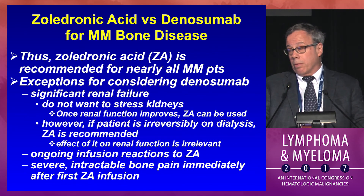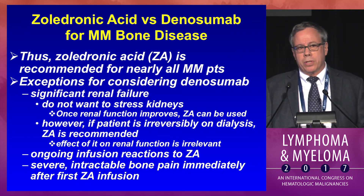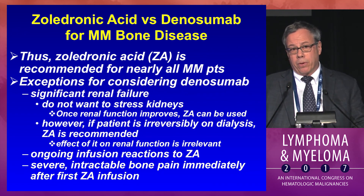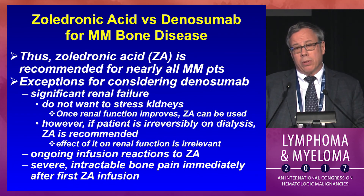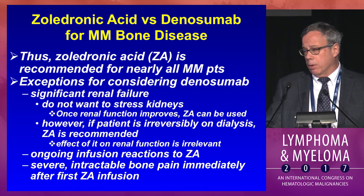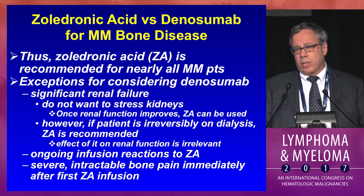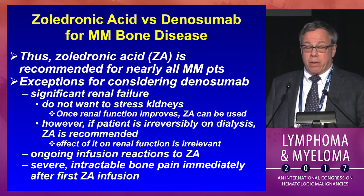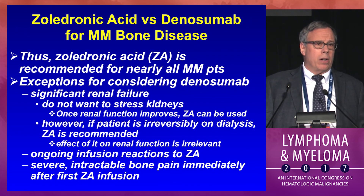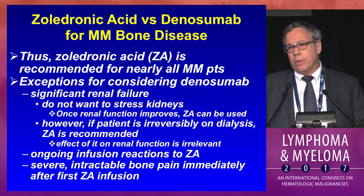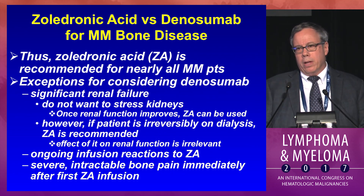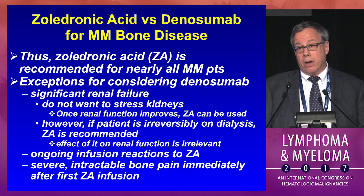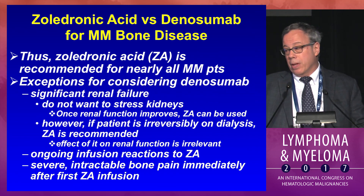I'm using denosumab now in patients with significant renal failure, particularly early in the disease course when you want to reverse renal failure and don't want to further insult the kidney with zoledronic acid. Once renal function improves, zoledronic acid is fine. If a patient is irreversibly on dialysis, there's no reason not to use zoledronic acid — you can't cause further harm. And in very rare patients with significant infusion reactions to zoledronic acid, or the rare patient with severe intractable bone pain after the first infusion, denosumab may be an option. Thank you.